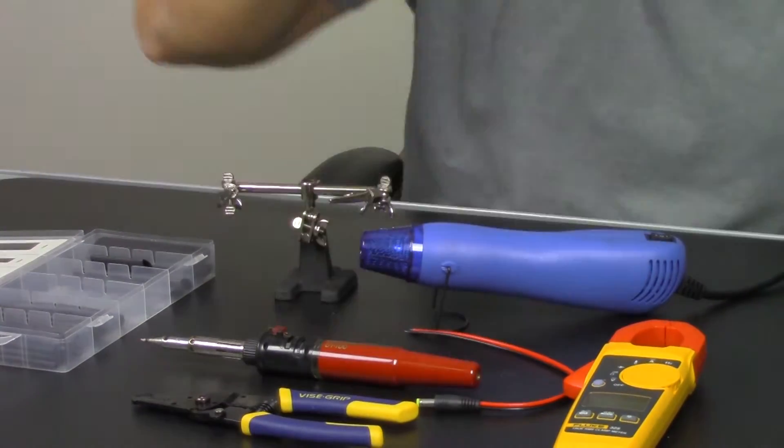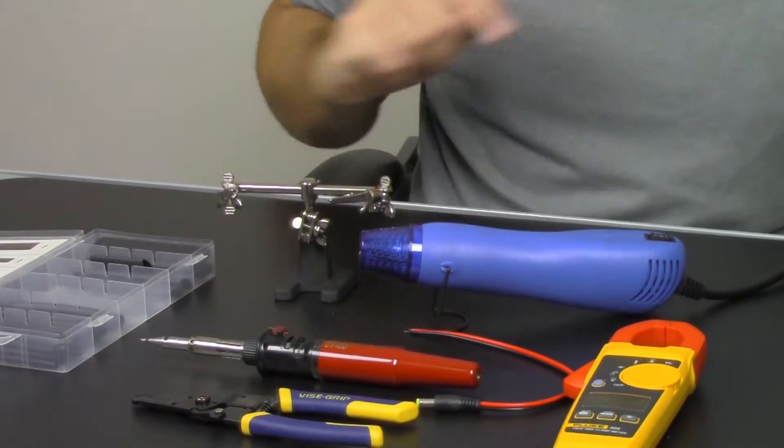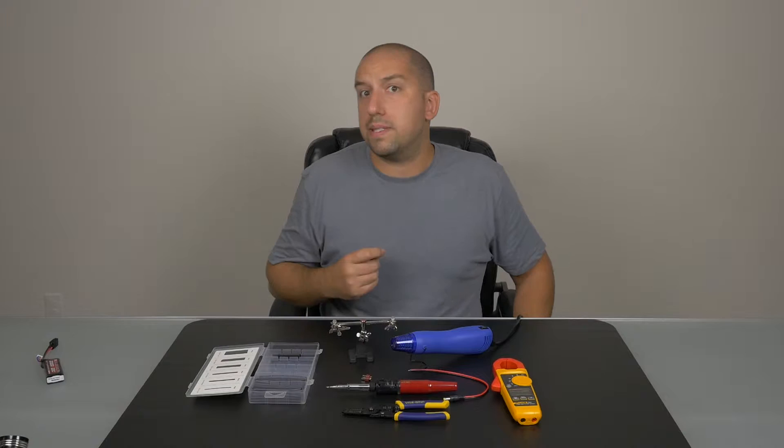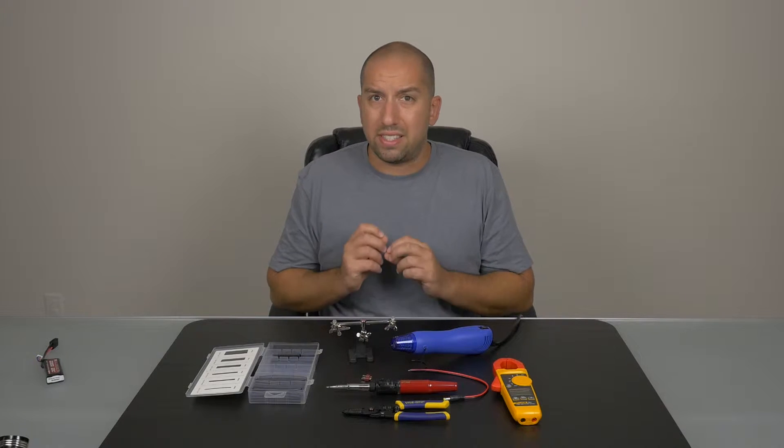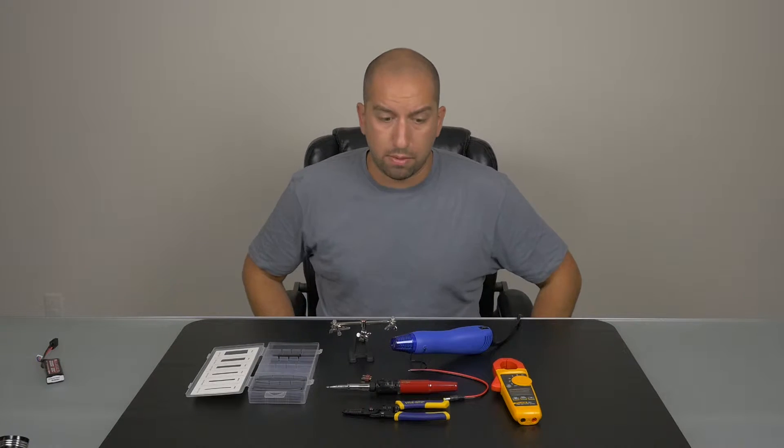We have our soldering torch, our heat shrink gun, and then some marine grade heat shrink. The heat shrink that we use has a glue inside. It makes the connections really stiff and makes it so they don't come loose in the future, which is nice.